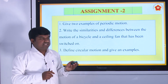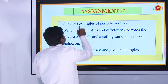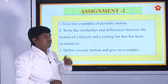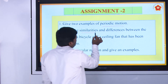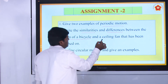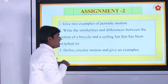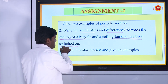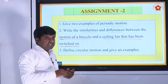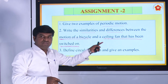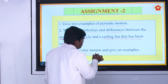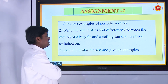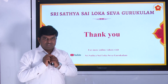With this, we conclude this chapter. This is assignment two for you. First question: give two examples of periodic motion. Second question: write the similarities and differences between the motion of a bicycle and a ceiling fan that has been switched on. Third question: define circular motion and give an example — you should define circular motion and give minimum two or three examples. Then this completes your chapter. Thank you, Sai Ram.